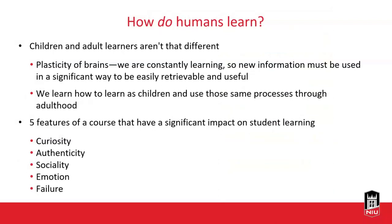In Eiler's book, he lays out this idea that children and adult learners aren't that different, which differs from what some others have been saying. He talks specifically about the plasticity of brains and how we're constantly learning. While we tend to think about children rewiring their brains with huge new things, he says new information is constantly coming in — but for it to be retrievable and stick with us long-term, it has to be used in a significant way.